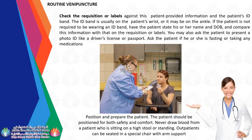Check the requisition or labels against the patient's provided information and the patient's ID band, usually on the wrist or ankle. If the patient is not wearing an ID band, have the patient state their name and date of birth, and compare with the requisition or labels. You may also ask the patient to present a photo ID like a driver's license or passport. Ask the patient if they are fasting or taking any medications.